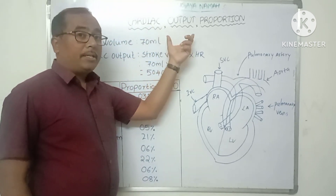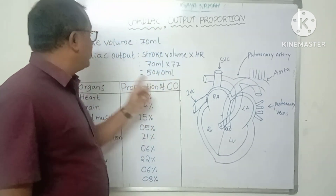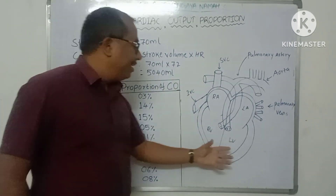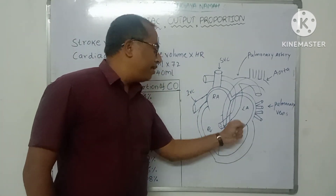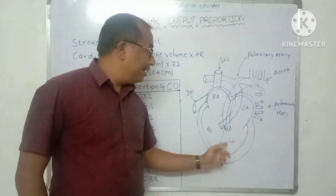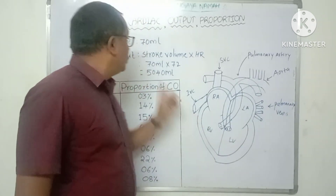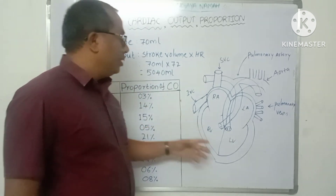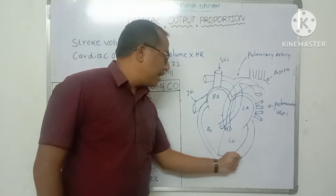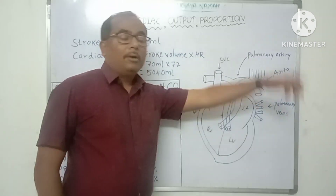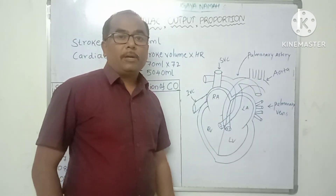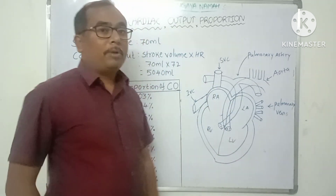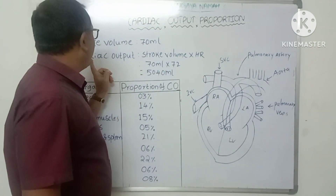To understand cardiac output, first we need to understand what is stroke volume. Stroke volume is the amount of blood pumped by the left ventricle in each contraction. Normally, stroke volume is 70 ml — so in one contraction, the left ventricle pumps 70 ml of blood for peripheral tissue perfusion.